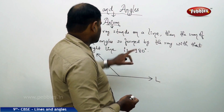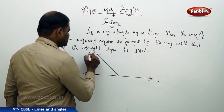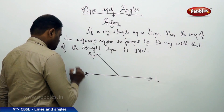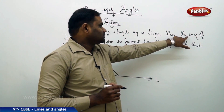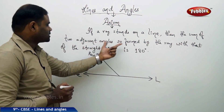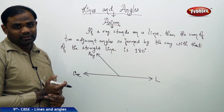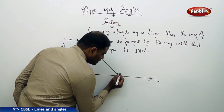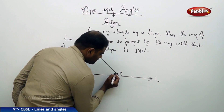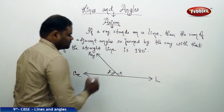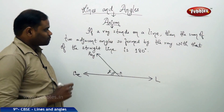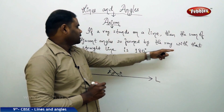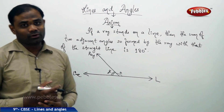If a ray stands on a line, the axiom says that the sum of the two adjacent angles so formed by the ray — we clearly know the adjacent angles formed by the ray are this angle and this angle — so the sum of two adjacent angles so formed by the ray with that of the straight line will always be 180 degrees.